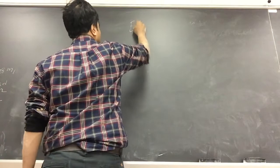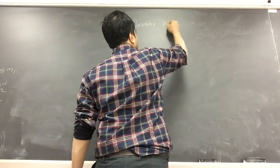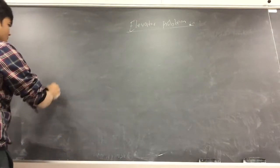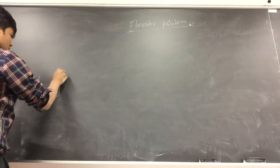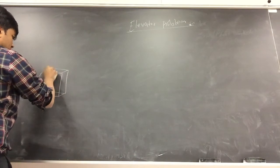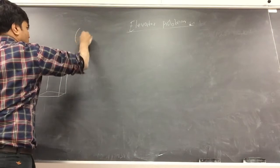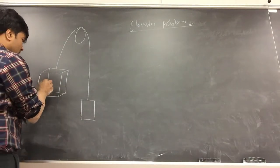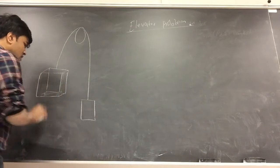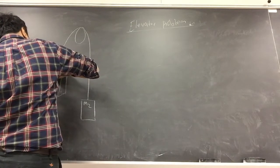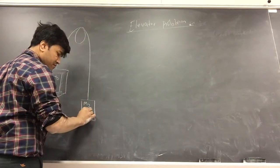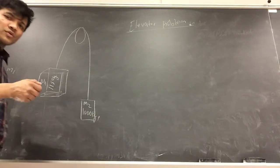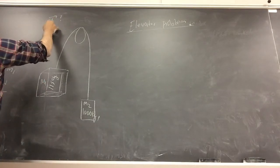This is the elevator problem. There are two masses: m1 is 1150 kilograms and m2 is 1000 kilograms, suspended on a pulley. What we need to find is the acceleration and the change in force.